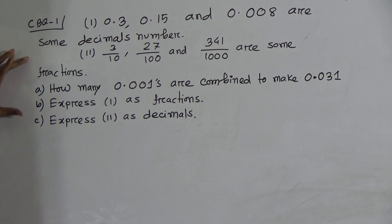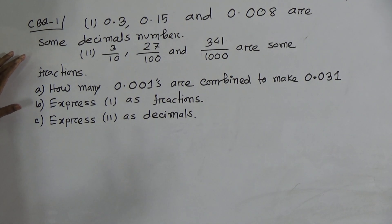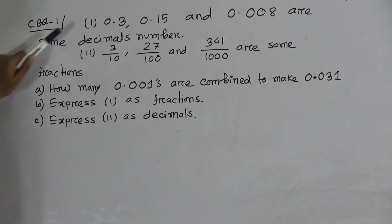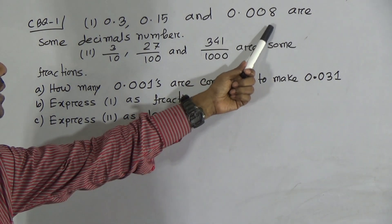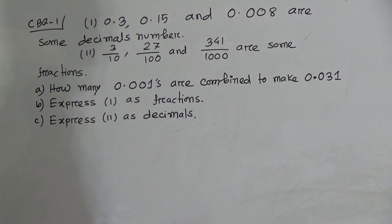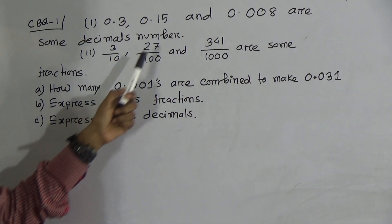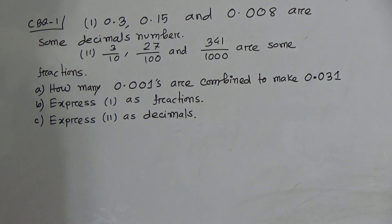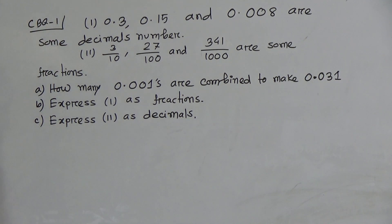CBQ 1 is created using the information of 9.8 Exercise 2. From this chapter, this CBQ question has been created. Let's read the questions. CBQ 1: 0.3, 0.15, and 0.008 are some decimal numbers. And 3 by 10, 27 by 100, and 341 by 1000 are some fractions. This is the stem.